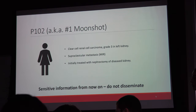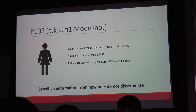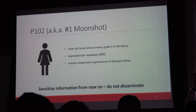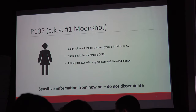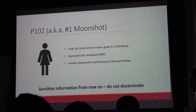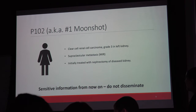The first enrollment in this project is Patient 102 — a female diagnosed with clear cell renal carcinoma in her left kidney and a supraclavicular metastasis detected via MRI. She was initially treated with a nephrectomy of the diseased kidney.